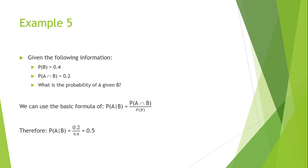Example 5: given probability of B equals 0.4 and probability of A and B equals 0.2 — calculate the probability of A given B. Using the formula: probability of A given B equals probability of A and B divided by probability of B. Therefore, probability of A given B equals 0.2 divided by 0.4, which is 0.5.